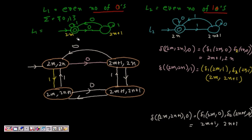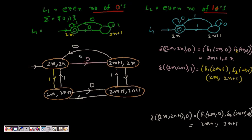For L1: in state 2m (even ones), getting a 1 moves to state 2m+1; getting another 1 returns to 2m. For L2: in state 2n (even zeros), getting a 0 moves to state 2n+1; getting another 0 returns to 2n. So L1 has states {2m, 2m+1} with 2m as the final state, and L2 has states {2n, 2n+1} with 2n as the final state.